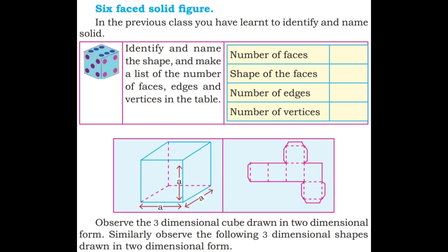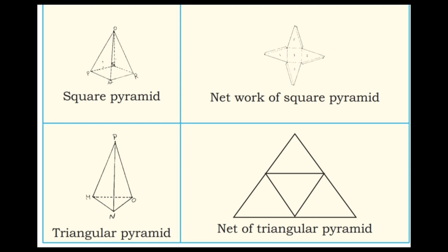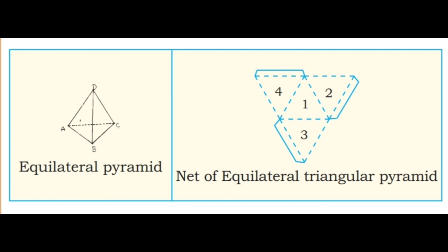Observe the three-dimensional cube drawn in two-dimensional form. Similarly, observe the following three-dimensional shapes drawn in two-dimensional form. The line segments joining the group of points in parts is called a network. Here is the cuboid net, net of a triangular base prism, net of a square pyramid, net of a triangular pyramid, and net of an equilateral triangular pyramid — all faces in triangular shape.